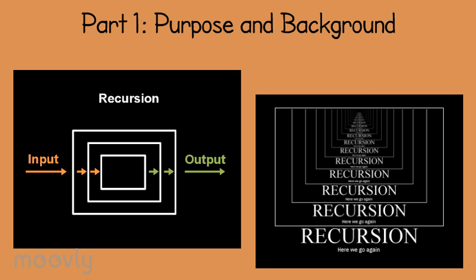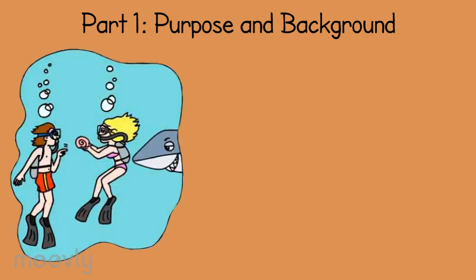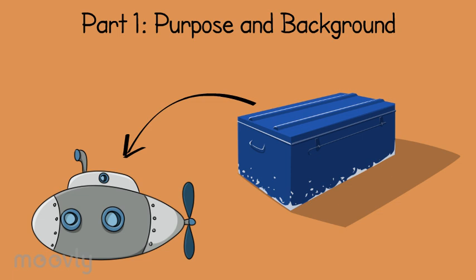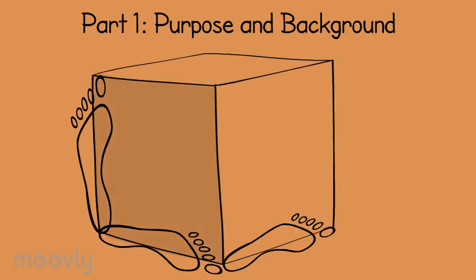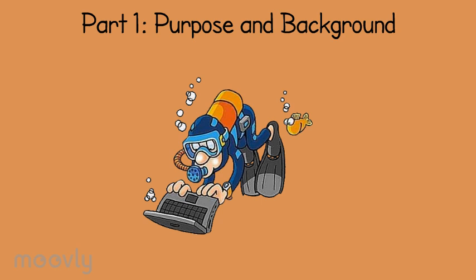Recursion happens anytime a function calls itself and can be useful in some circumstances. The background or story behind the lab is that you're out scuba diving with a programming friend when you encounter a large box-shaped storage facility inside of a submarine on the ocean floor. You and your friend decide to whip out your laptops and begin to program an algorithm to find the shortest path through the maze.